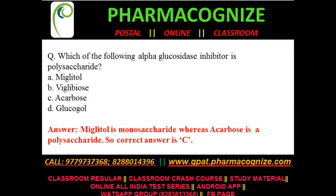Hi everyone, today we are going to discuss five more questions. First question: which of the following alpha glucosidase inhibitors is a polysaccharide? Option A is miglitol, option B is voglibose, option C is acarbose, option D is glucagol. The answer is C, acarbose, because miglitol is a monosaccharide whereas acarbose is a polysaccharide. Both are alpha glucosidase inhibitors, so the answer is acarbose.